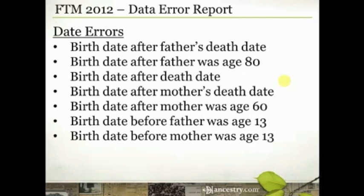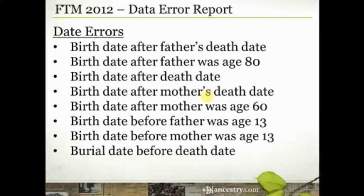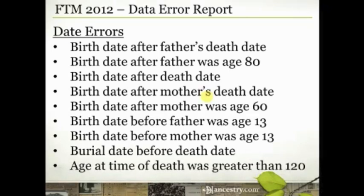This gives you a list of people in your tree that need closer examination — places where you've got some weird things happening, like children born after their mother died. A couple more date errors: a burial date before a death date, or an age at time of death greater than 120. Again, possible but not very likely, so we need to check those and make sure we didn't type something incorrect or import an incorrect set of information.